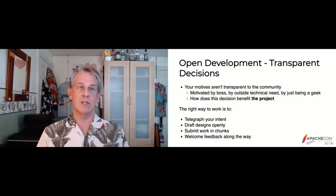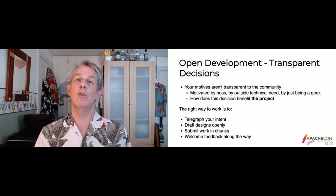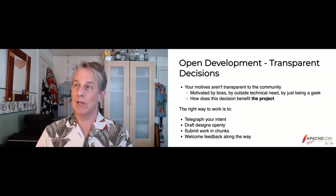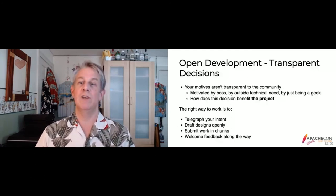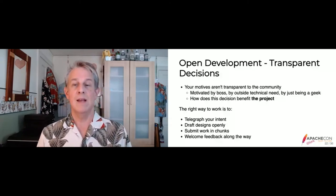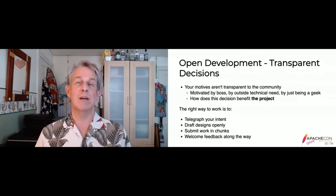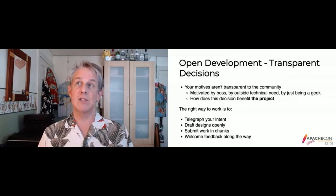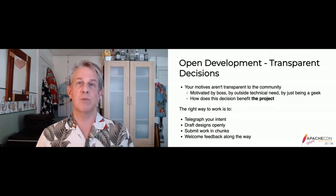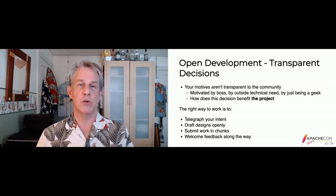Key ways to do this: telegraph your intent. If you know you want to do something, send an email to the dev list with your ideas ahead of time. Give the community time to give feedback — someone might say, "we already have a better streaming model, have you seen X?" When you're drafting your design, put the rough draft out. It may not be pretty yet, but it allows the rest of the community to help refine it. By the end, it'll be the project's plan for moving forward because everyone participated and the community has ownership.